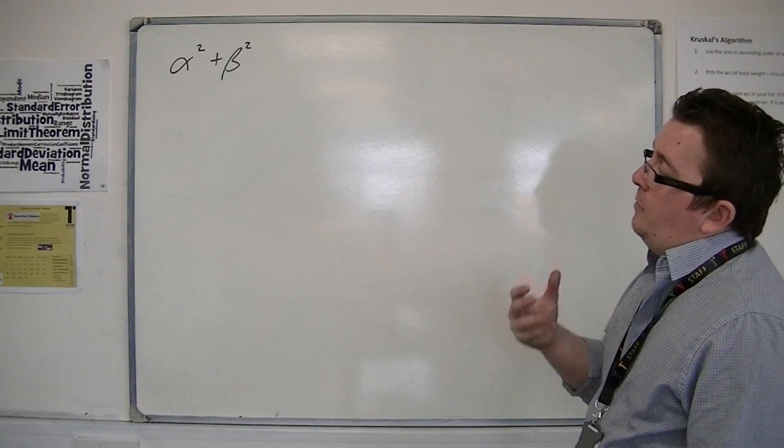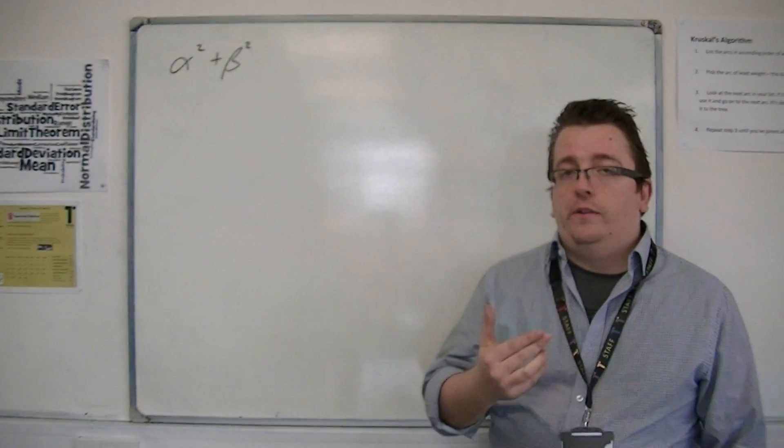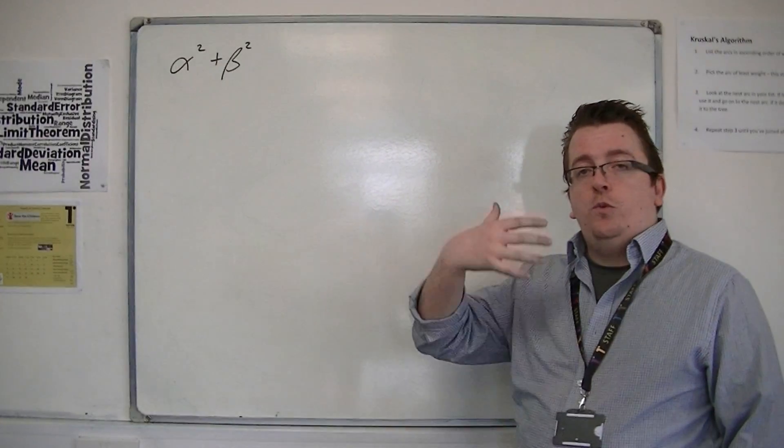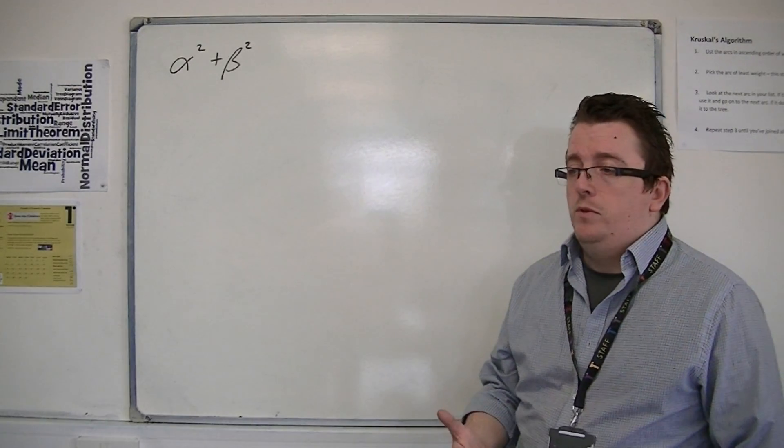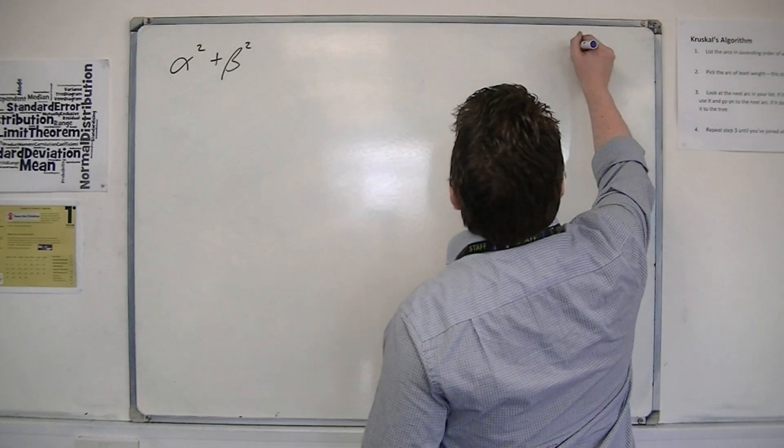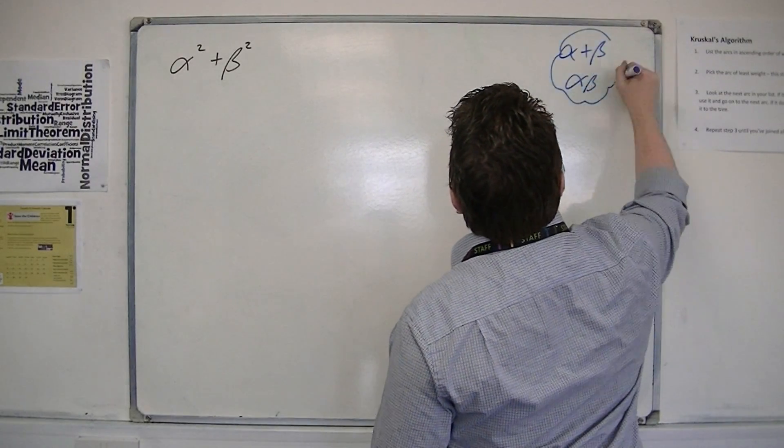Now, alpha squared plus beta squared, it's not immediately obvious how we're going to get this into alpha plus betas and alpha betas. That's what we want. We want to get it into terms of alpha plus beta and alpha betas. That's my goal here.